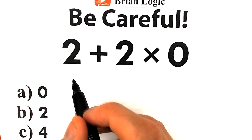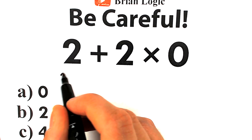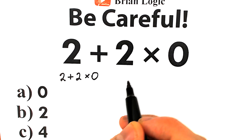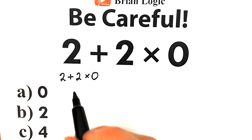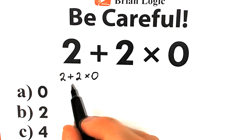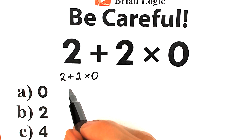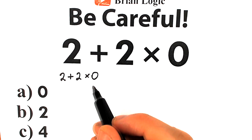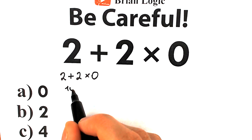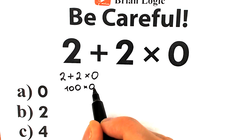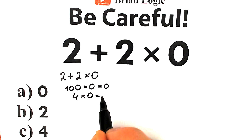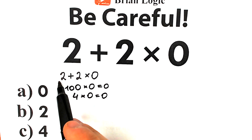There are two types of students. The first type solves this question like this: we have 2 plus 2 times 0. A lot of students from school know that if you multiply any number by 0, you get 0 as a result — no matter what value you have on the left-hand side. For example, 100 times 0 equals 0, or 4 times 0 equals 0.